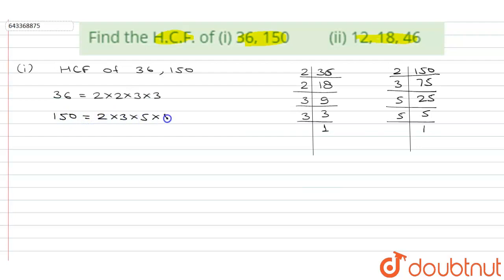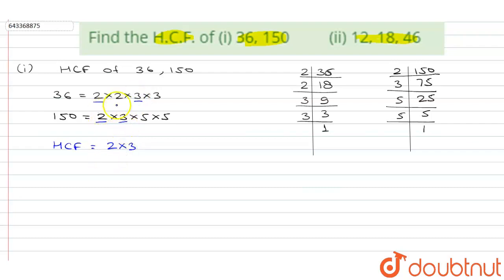Now let's find the HCF. HCF means Highest Common Factor, so we write all common factors between 36 and 150. We can clearly see that 2 is a common factor in both, and 3 is also a common factor in both. So the common factors are 2 and 3, and the HCF is 2 × 3 = 6. The HCF of 36 and 150 is 6.